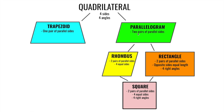If there are two pairs of parallel sides — this side is parallel to that side, and the opposite sides are also parallel — we call that a parallelogram. So if a quadrilateral has only one pair of parallel sides it's a trapezoid; if it has two pairs it's a parallelogram.